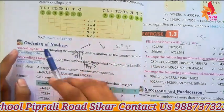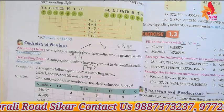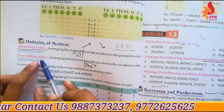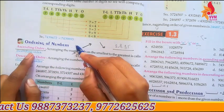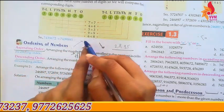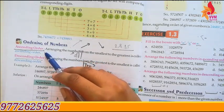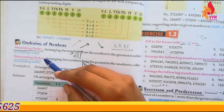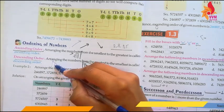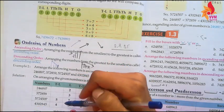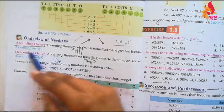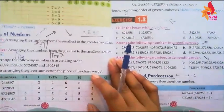Then comes ordering of numbers, which is of two types: ascending order and descending order. In ascending order, we arrange numbers from smallest to largest — going upward. In descending order, we arrange numbers from largest to smallest — going downward. After this we do the exercise.